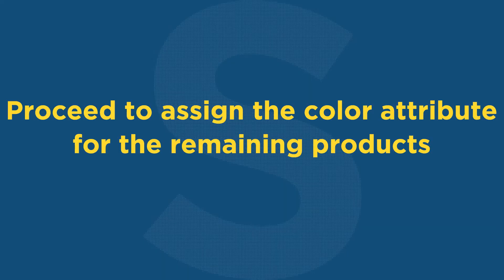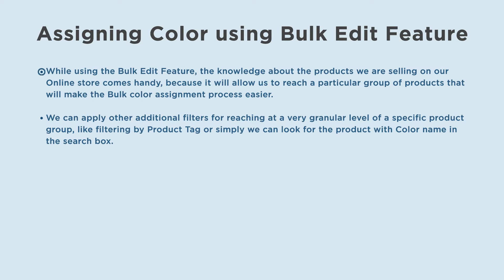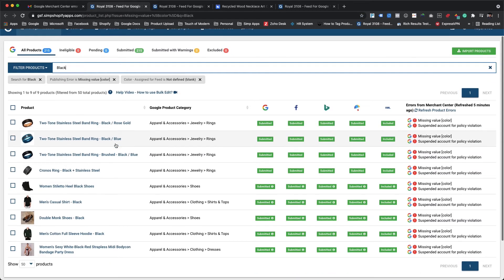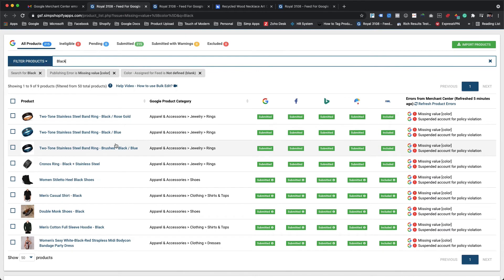Let's proceed to assign the color attribute for the remaining products. While using the bulk edit feature, knowledge about the products we are selling in our online store comes in handy, because it allows us to reach a particular group of products and make the bulk color assignment process easier. We can apply additional filters to reach a very granular level of a specific product group, like filtering by product tag, or simply searching for the product with the color name in the search box. Here we are searching for the color black, which will narrow down results to show only those products that include black in their product titles.